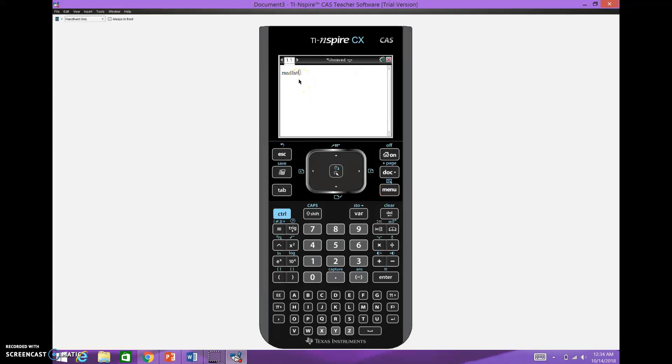So it'll be Random Int. Now a six-sided die has six faces. It is from one, and then we'll go comma, and then six. And then finish out the parentheses. So when I press Enter, and I continue to press Enter, that's just going to give me the roll of one die. I've got a five on the first one, a one on the second one, a three on the third one.